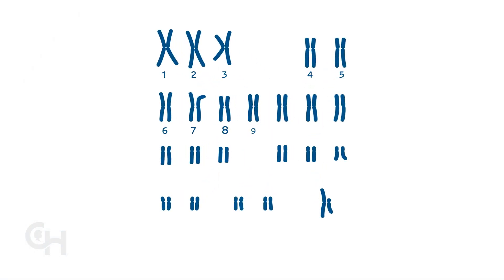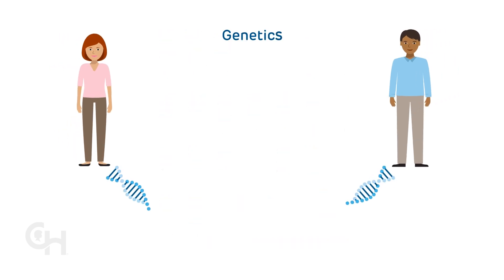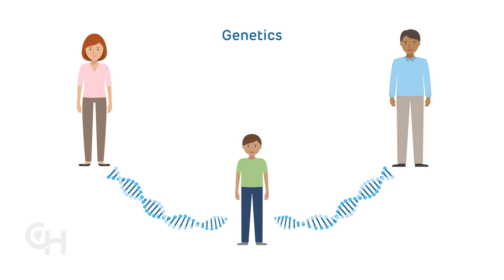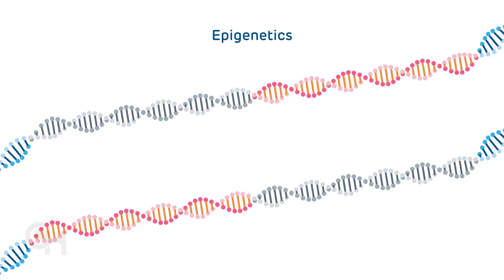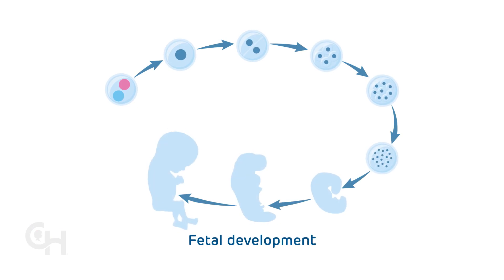A child inherits two sets of chromosomes, one set of 23 chromosomes from their mother and one set of 23 chromosomes from their father, making a total of 46 chromosomes. Genetics is a study of how genes are passed from a mother and father to their children. Epigenetics is a study of how the functions of a person's genes change. Some genes may or may not express certain traits. Epigenetic changes occur after conception, as the embryo turns into a baby.